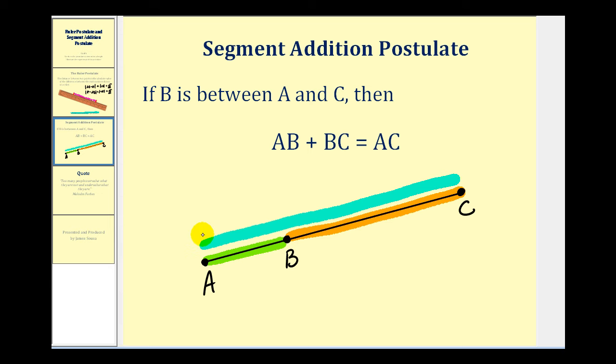Looking at it numerically, if we know the segment AC has a length of, let's say, fifteen centimeters, and we place the point B between points A and C on the segment, so the length of segment AB would be four and the length of segment BC would be eleven. So from this postulate, AB would be four, BC would be eleven, and so AB plus BC would equal AC, which is equal to fifteen. And that's the segment addition postulate.